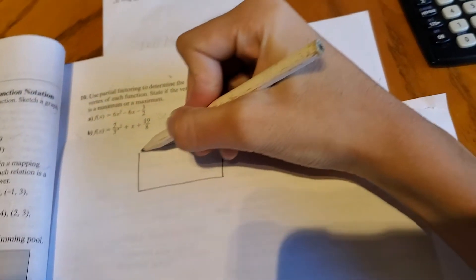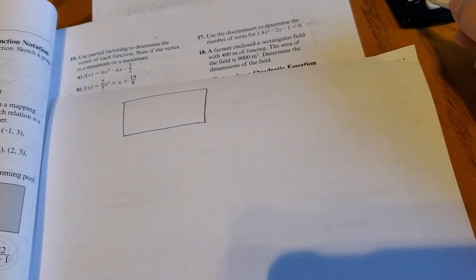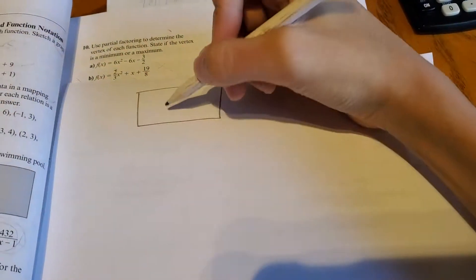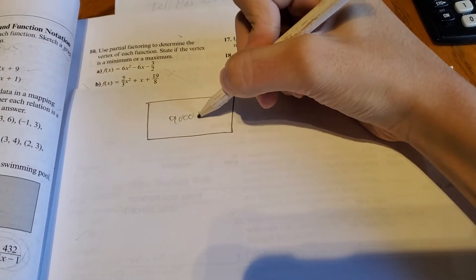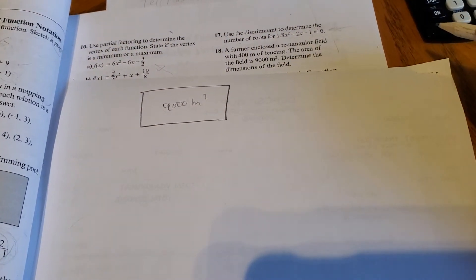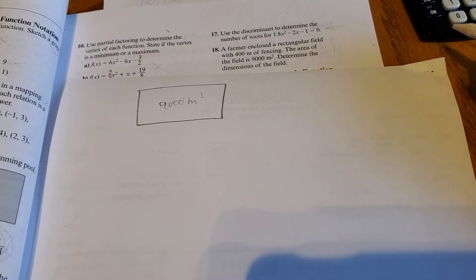So first let's sketch the rectangle for the field. So here I have a rough sketch of the rectangle. The area of the field is 9,000 meters squared, and we need to determine the dimensions of the field.